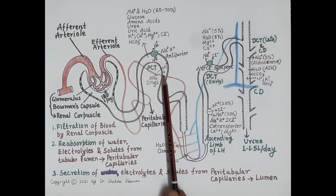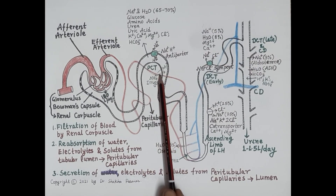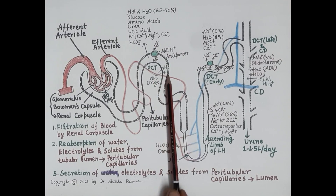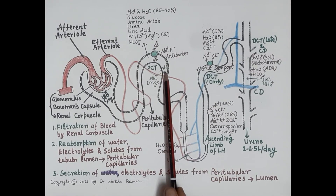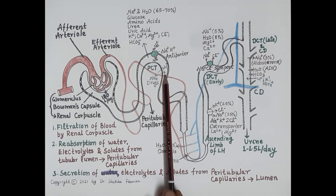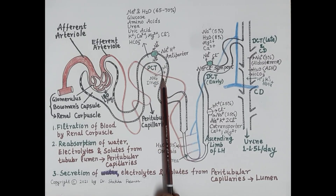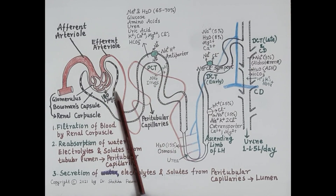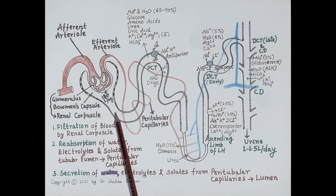Hydrogen ions are also secreted, and these are essential for the maintenance of normal blood pH. Ammonia and ammonium ions are also secreted. Once these substances are secreted into the tubular lumen, they become part of the urine and are excreted from the body.